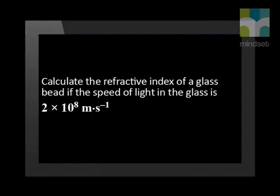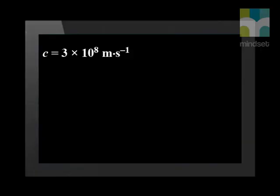Let us now do an example to make sure we know how to use this equation. Remember to start with a list of the variables that are given. We know that the speed of light in a vacuum is a constant, 3 × 10⁸ meters per second. We are told that the speed of light in the glass bead, v, is 2 × 10⁸ meters per second. And we are asked to calculate the refractive index, n.